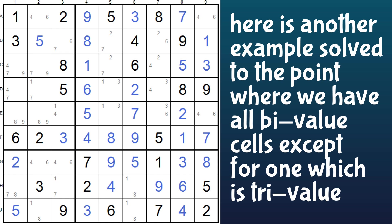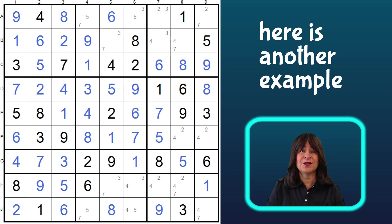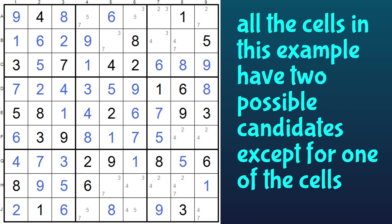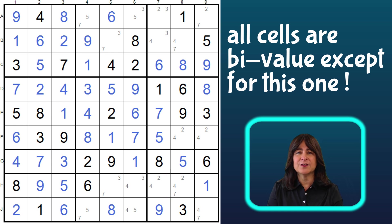Here's another Sudoku puzzle, also solved to this point, where we have all bivalue cells except for this cell. And here's another one. Notice the pattern? Again, all bivalue cells — meaning two values in each cell, or we could call them binary cells — except for one, this one.